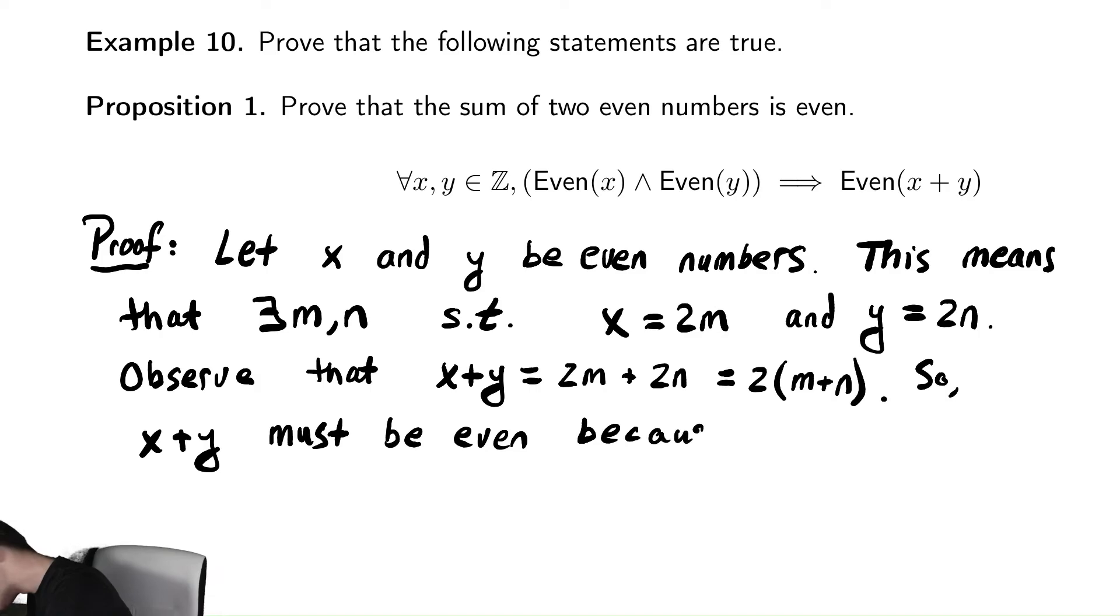Because—just to make sure we get all of our evidence written down—m plus n is an integer. And in the previous line, we can see that's written as 2 times m plus n.